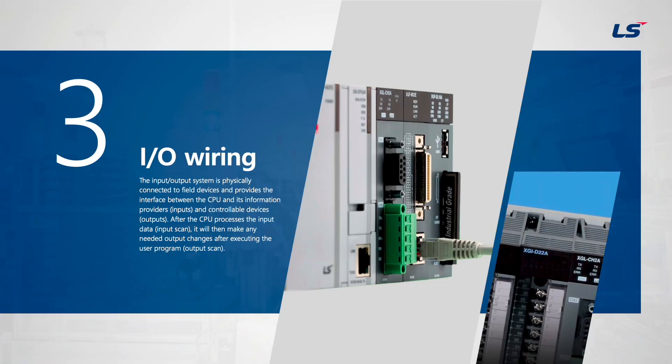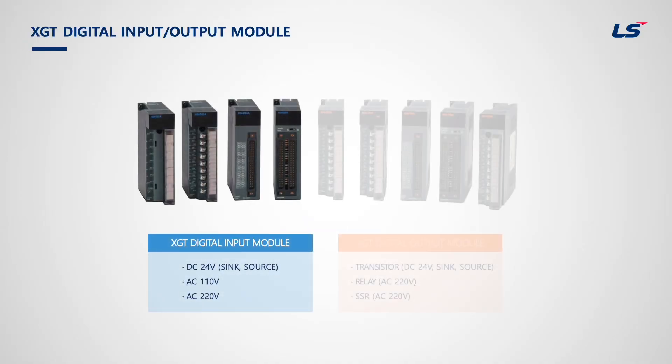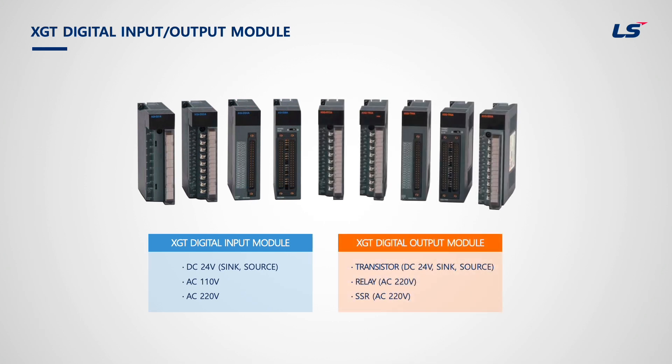Chapter 3 is about input-output wiring. These are digital input and output modules. On the left-hand side are digital input modules and on the right-hand side are digital output modules. Digital input modules use DC 24 voltage or AC 110/220 voltage. The DC type has both source and sink types, and some modules can be used as both sink and source.